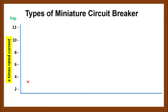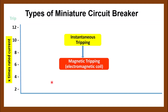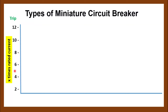I will explain the functionality of different types of miniature circuit breaker using a graph. The different types depend on the capability to trip or break the circuit at multiple times the rated current. All types mainly depend on instantaneous tripping, which is done through magnetic tripping — not overload tripping. Whenever the current exceeds multiple times the rated current, the instantaneous tripping will be activated.